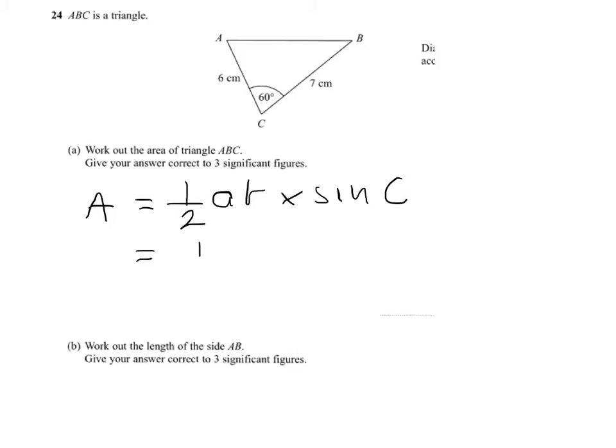We'll need a calculator to do this, but it's going to be one-half times six times seven times sine of 60 degrees. You'll see that I've simply substituted in the six and the seven. It doesn't actually matter which way round you put them in, and the sine of 60.